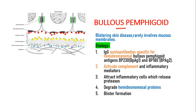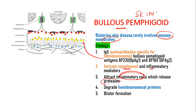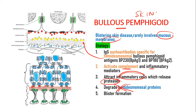Bullous pemphigoid is the other variant. It rarely involves the mucous membranes and mainly involves the skin. There are IgG autoantibodies specific for hemidesmosomal bullous pemphigoid antigens. These activate complement and inflammatory mediators, which attract inflammatory cells that release proteases and degrade the hemidesmosomal proteins, leading to blister formation.